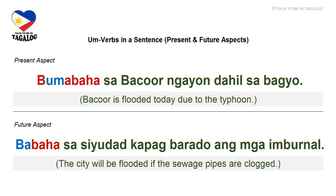Present aspect: Bumabaha sa Bacolor ngayon dahil sa bagyo — 'Bacolor is flooded today due to the typhoon.' Bumabaha means flooding or flooded, Bacolor is a city outside Metro Manila, ngayon means today, and dahil means because. Future aspect: Babaha sa syudad kapag barado ang mga imburnal — 'The city will be flooded if the sewage pipes are clogged.' Syudad is city, kapag means if, barado is clogged, and imburnal means sewage pipe.